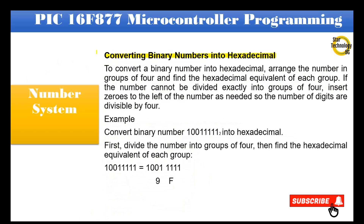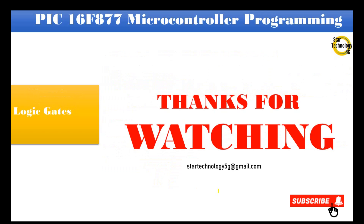Converting binary numbers into hexadecimal: To convert a binary number into hexadecimal, arrange the number in groups of 4 and find the hexadecimal equivalent of each group. If the number cannot be divided exactly into groups of 4, insert zeros to the left as needed. Example — Convert binary number 1001111 into hexadecimal: group as 0100 and 1111; 1001 = 9 and 1111 = F, giving 9F. Thanks for watching. Please subscribe to Star Technology 5G.